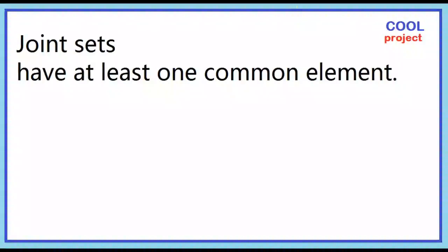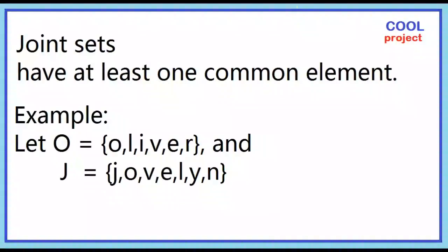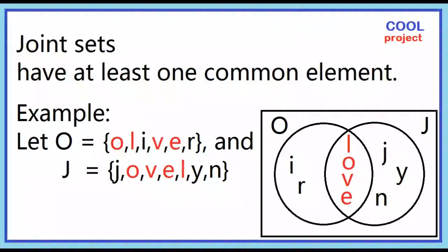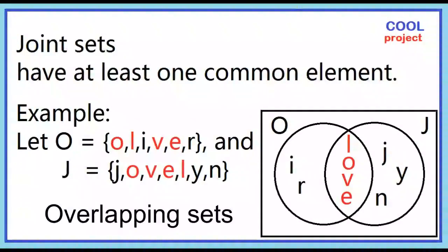Joint sets have at least one common element. Example: Let O be the set of letters in the word 'Oliver' and J be the set of letters in the word 'Juveline.' Are there elements common to both O and J? Yes — O, L, V, and E. Sets O and J are joint sets or overlapping sets.